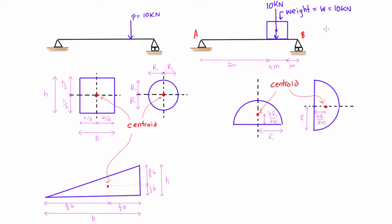So if we take our sum of moments about A, then we have 10 kilonewtons times eight meters is going to be equal to BY times this total distance which is 10 meters.